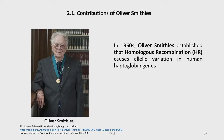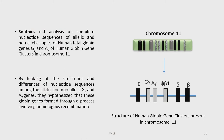Let us look into the contribution of Oliver Smithies. Smithies in the 1960s established that homologous recombination causes allelic variation in human haptoglobin genes. He analyzed complete nucleotide sequences of allelic and non-allelic copies of human fetal globin genes G-gamma and A-gamma of the human globin gene clusters in chromosome number 11. By comparing similarities and differences among these sequences, his team hypothesized that these globin genes formed through a process involving homologous recombination.